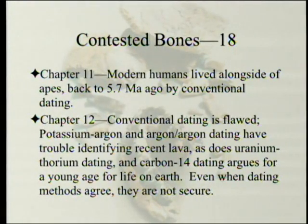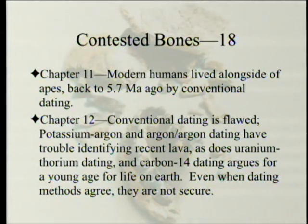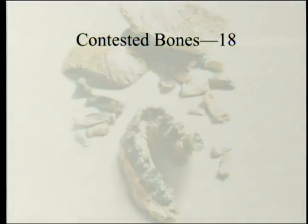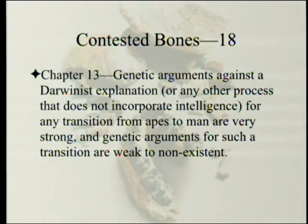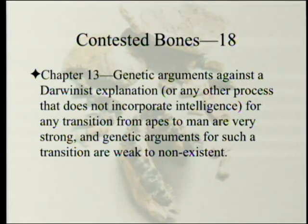Chapter twelve argues that conventional dating is flawed. Potassium-argon and argon dating have trouble identifying recent lava, dating it too old quite often, as does uranium-thorium dating. Carbon-14 dating actually argues for a young age for life on earth, even when dating methods agree — a whole bunch of them are not secure. Chapter thirteen states that genetic arguments against the Darwinist explanation for a transition from apes to man are really very strong, and genetic arguments for such a transition are weak to non-existent.